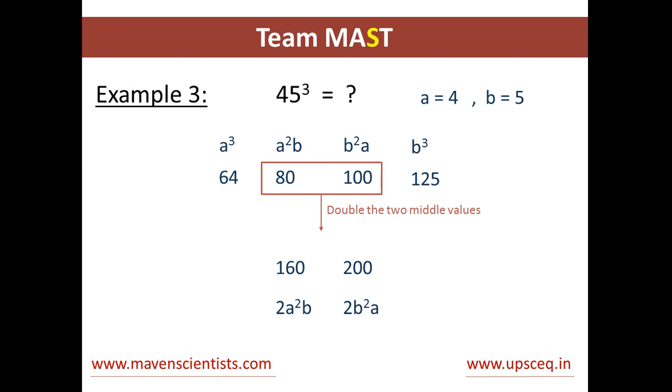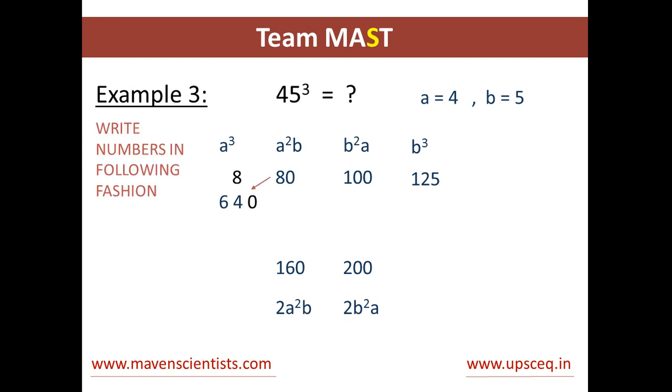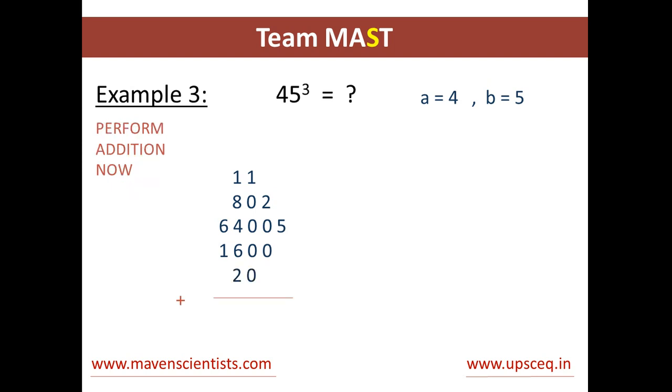Now we'll double the middle values and we get 2a²b and 2ab² which is 80 into 2 equals 160 and 100 into 2 equals 200. So now we'll write the numbers in the following fashion.